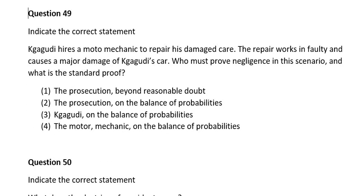Question forty-nine. Indicate the correct statement. Kagiso hires a motor mechanic to repair his damaged car. The repair work is faulty and causes major damage to Kagiso's car. Who must prove negligence in the scenario and what is the standard of proof? Number one, the prosecution beyond reasonable doubt; number two, the prosecution on the balance of probabilities; number three, Kagiso on the balance of probabilities; number four, the motor mechanic on the balance of probabilities. The correct answer is number three: Kagiso on the balance of probabilities.